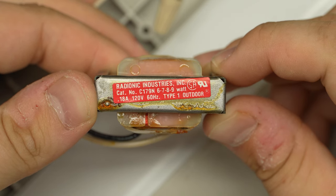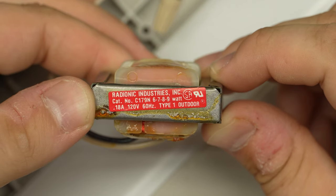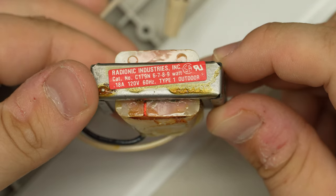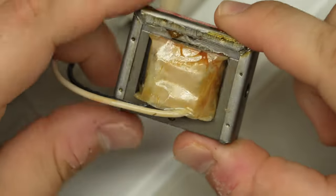It's used for 6, 7, 8, and 9 watt bulbs. 0.18 amps, 120 volts. Type 1 outdoor. It's an outdoor type ballast. I don't know what that means. But look at this. Look how small this thing is. It looks like a mini transformer.